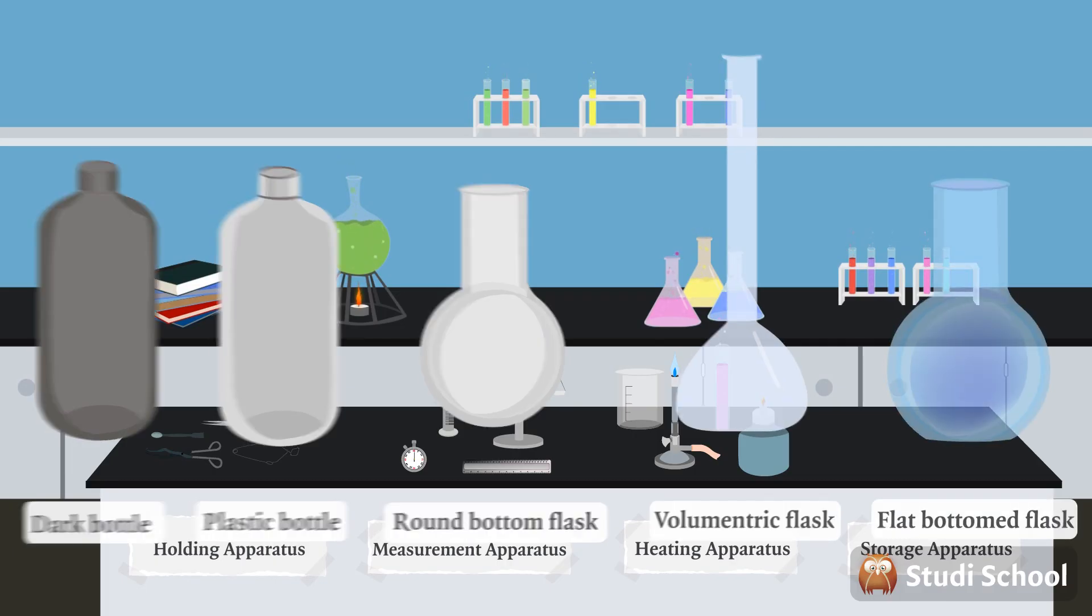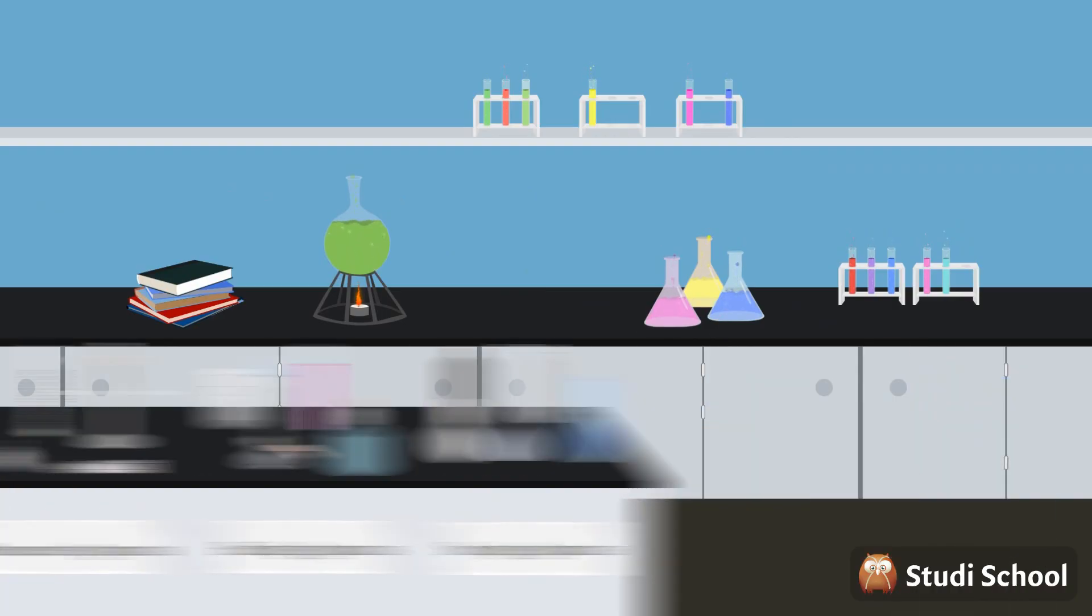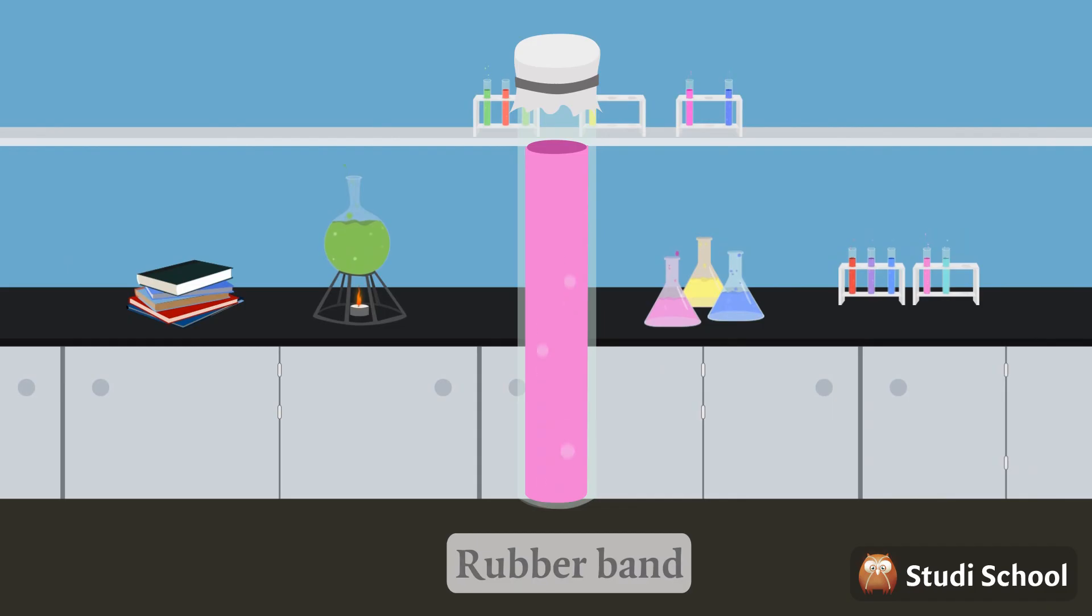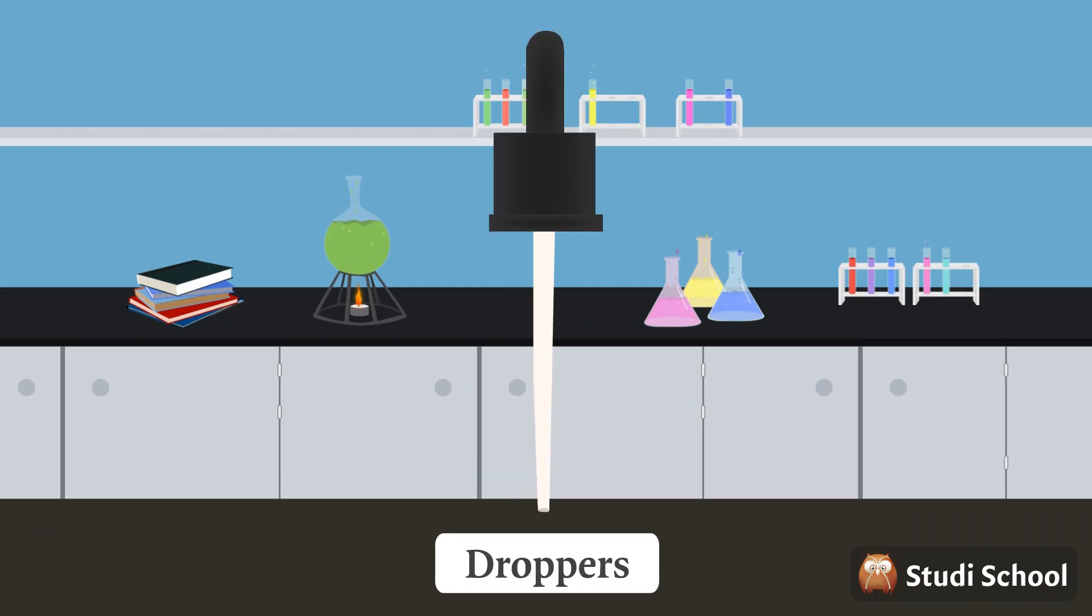Let's look at some apparatus in more detail. This is called a desiccator and is used for drying specimens. These are rubber bands to prevent gases or liquids from escaping out during experiments. These are called droppers and are used to transfer liquids drop by drop.